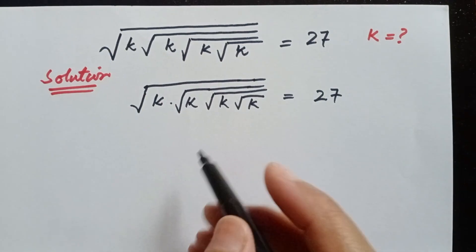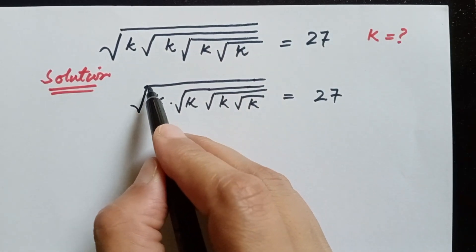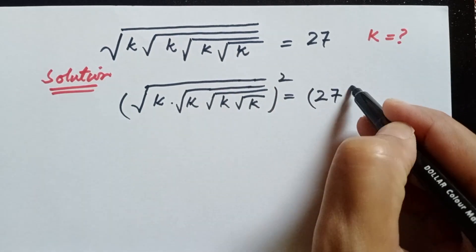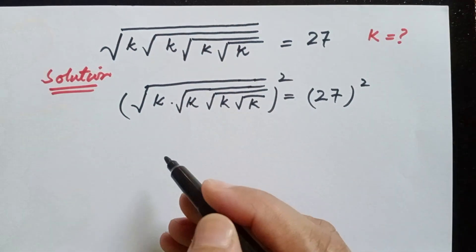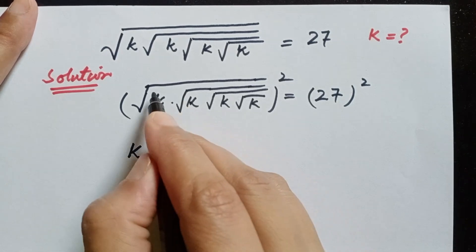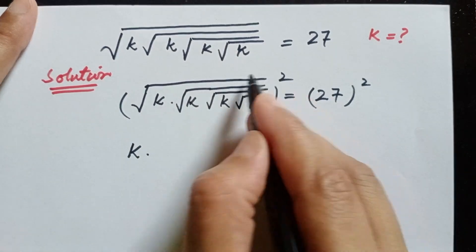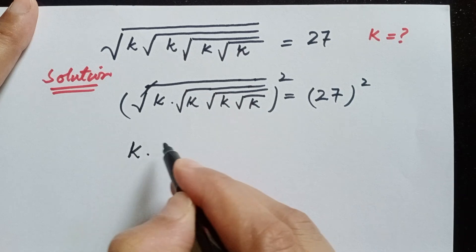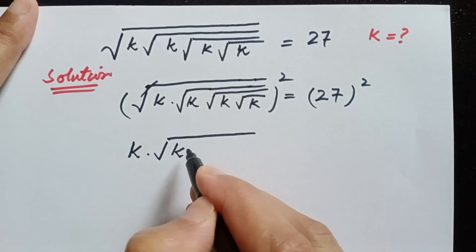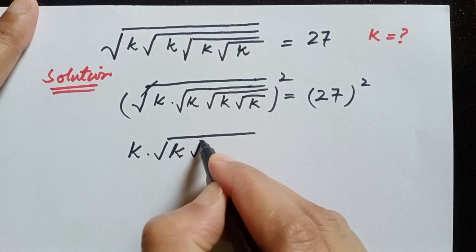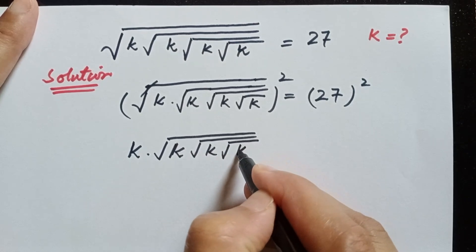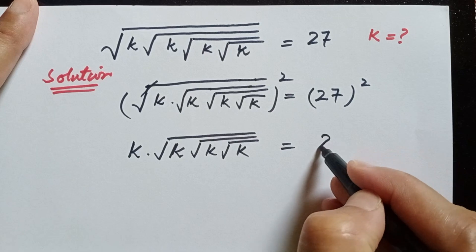To remove this square root we will take the square on both sides — squaring both sides. The square root will cancel with the power of 2 and we will get k times square root of k times square root of k times square root of k is equal to 27 squared.